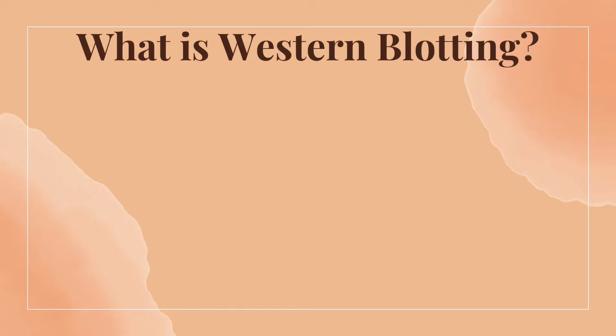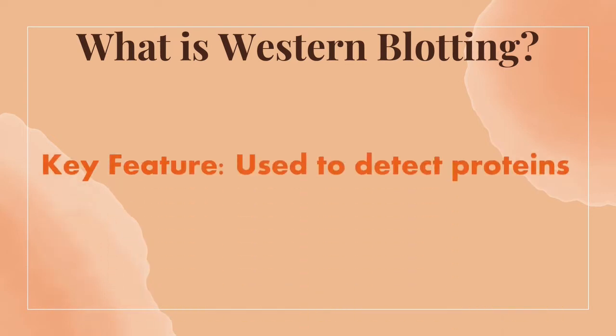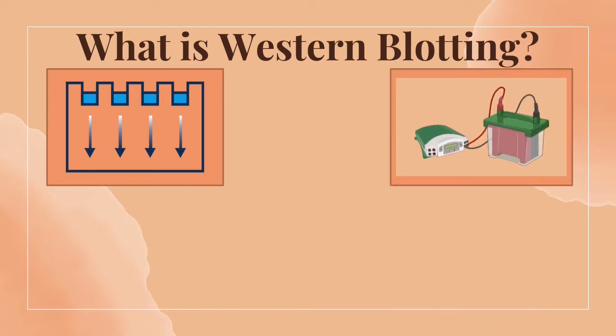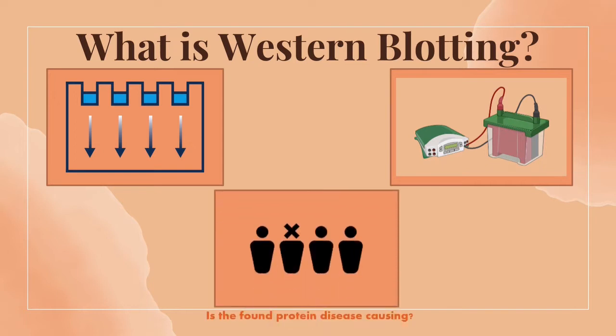Before we dive into how we can use Western blotting, I would like to highlight key features of Western blotting and how these features are crucial for today's discussion. Western blotting can be used to detect a certain protein in samples. The proteins are put through a gel that with small holes and electricity separates and organizes various proteins based on their size. This process is known as gel electrophoresis. Researchers can then see if the protein isolated is disease-causing or not. If there are any concepts that do not make sense or interest you, feel free to check out our previous videos that are focused on Western blotting.